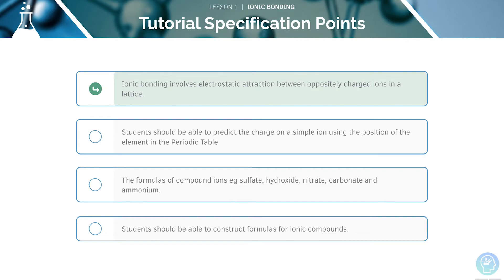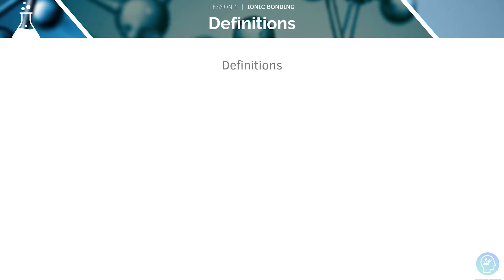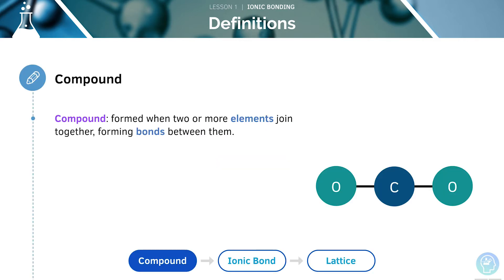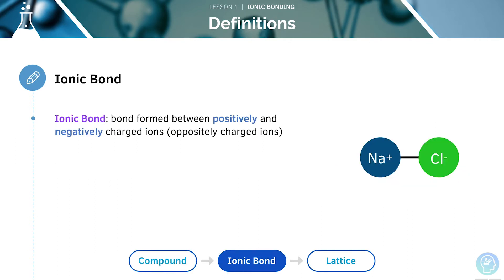We will start off by looking at what ionic bonding involves. Let's look at three important definitions for this section. A compound is formed when two or more elements join together, forming bonds between them. For example, carbon dioxide is a compound formed where carbon and oxygen atoms join together. An ionic bond is the bond formed between a positively charged and negatively charged ions, due to the electrostatic forces of attraction between them.